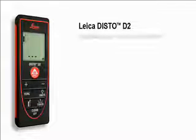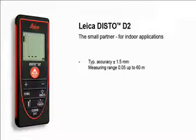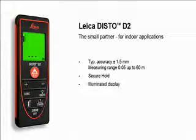The Leica DISTO D2, the small partner for indoor applications. The Leica DISTO D2 is small, light, and compact. Thanks to the soft grip design, it fits securely in your hand. With the illuminated display, you can measure easily and trouble-free even in dark rooms.